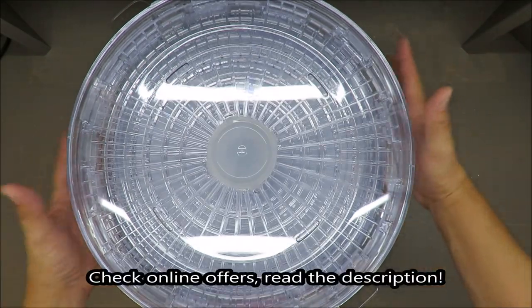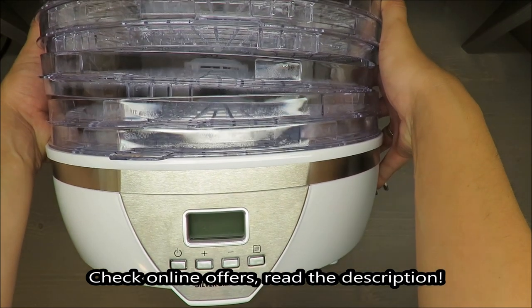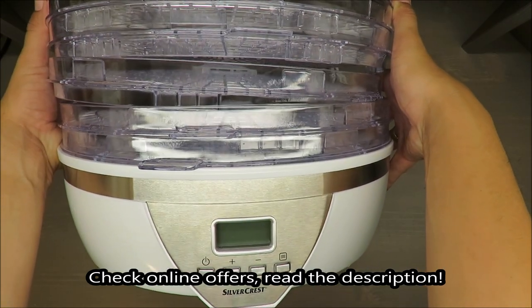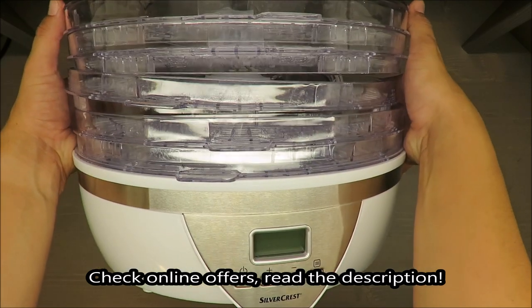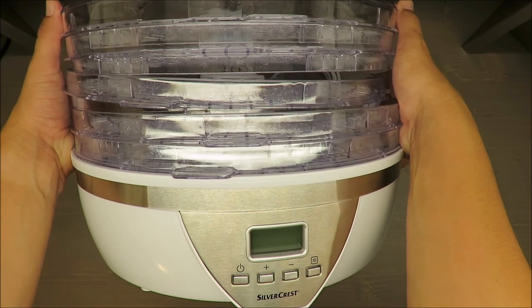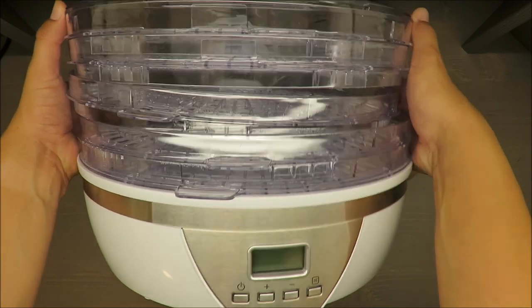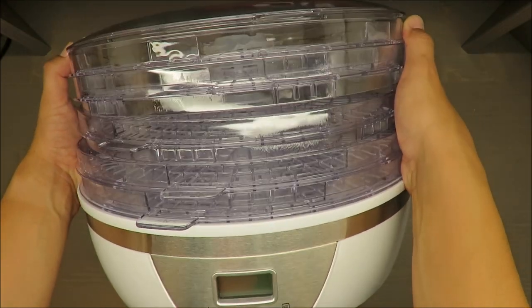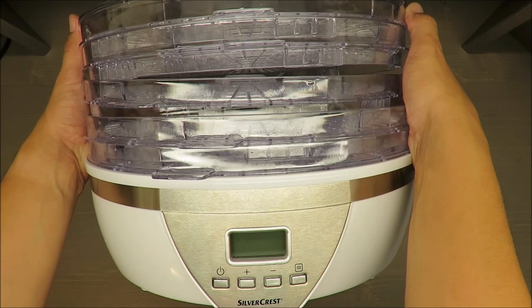Hello everybody, this is Out of the Box Unboxing. In today's episode I will present a review for you of the Silvercrest Food Dehydrator. The intended use is to remove water out of vegetables, fruits, and generally from food.